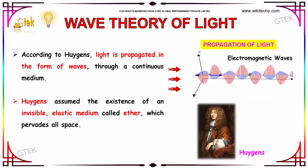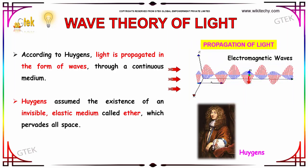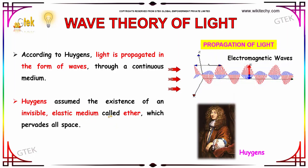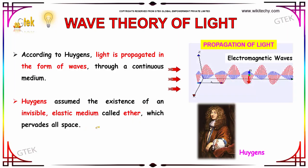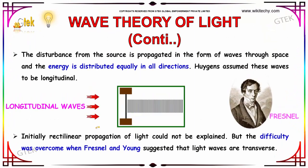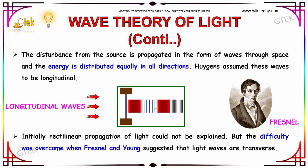According to Huygens, light is propagated in the form of waves through a continuous medium. This is referred to as the wave theory of light. Huygens assumed the existence of an invisible elastic medium called ether, which pervades all of space. The disturbance from the source is propagated in the form of waves through space and the energy is distributed equally in all directions.